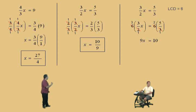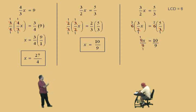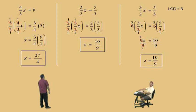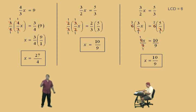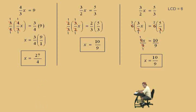9x equals 10. We need to divide both sides by 9. That gives us 1x equals 10 over 9. Very nice there, Charlie. So let's finish here, and we're going to come back and do some more equations soon. Anyway, keep up with the homework, and we'll see you again soon!